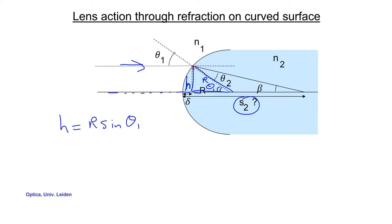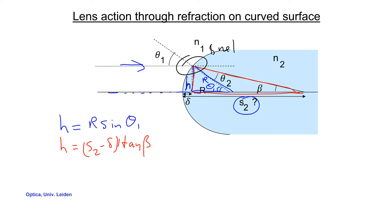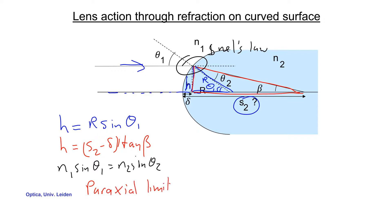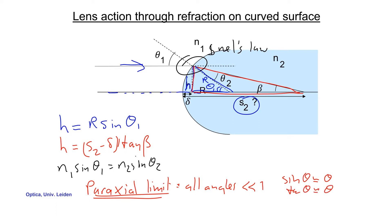Looking at a different triangle, we get h = (S2 minus delta) times the tangent of beta. And the final relation is, of course, the application of Snell's law: at this interface, n1 sine theta_1 = n2 sine theta_2. Now these expressions look complicated, but you can apply a trick in the so-called paraxial limit, which applies when all angles are much smaller than one.